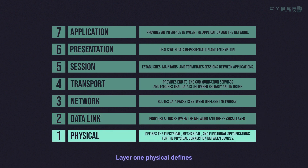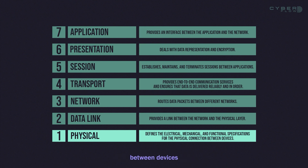Layer 1, Physical, defines the electrical, mechanical, and functional specifications for the physical connection between devices. It is responsible for transmitting and receiving data over the physical media.